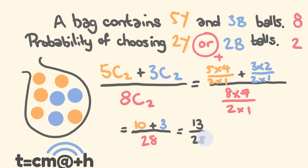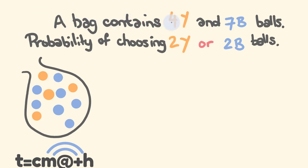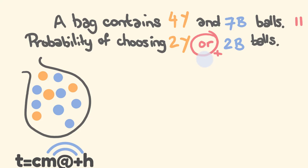How did you go with that? What about I give you an example to try? A bag contains four yellow and seven blue balls — that's 11 balls altogether. What's the probability of choosing two yellow or two blue balls? So we're going to be choosing two balls.